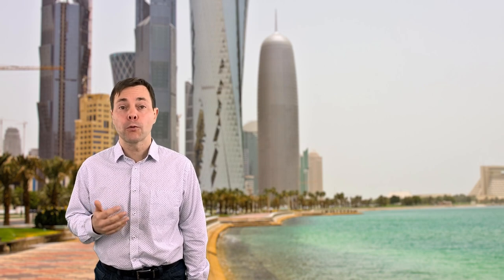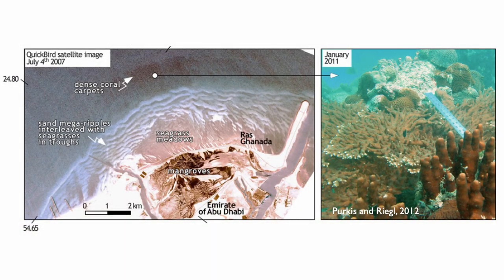Here is another example of a dense coral carpet, away from the sand. You can also see seagrass meadows, which grow on sand and contribute to carbonate sand production in the system — similar to the Bahamas. Behind the seagrass meadow we see mangroves.